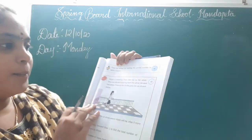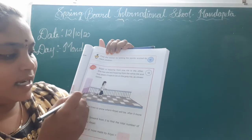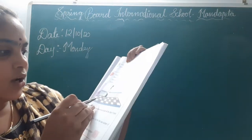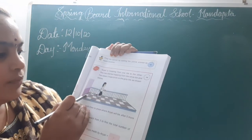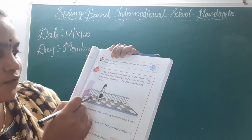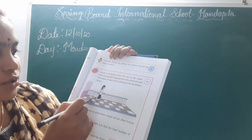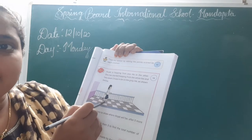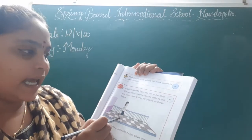She is hopping from the white tile. So here this is the white tile. She is hopping 3 times: 1, 2, 3. So now she is in the grey tile.